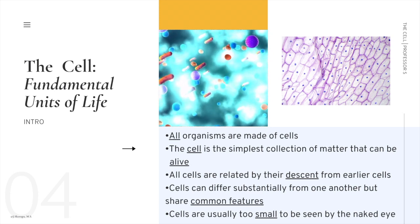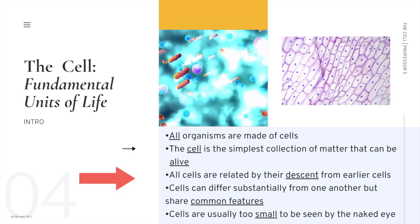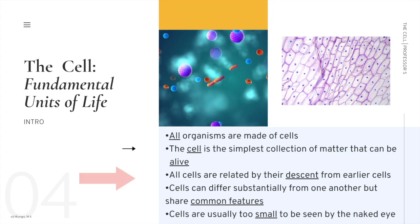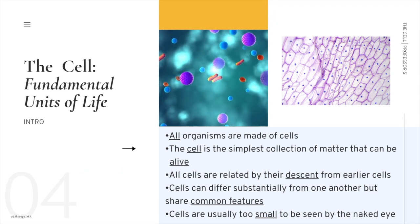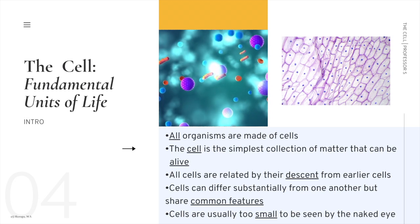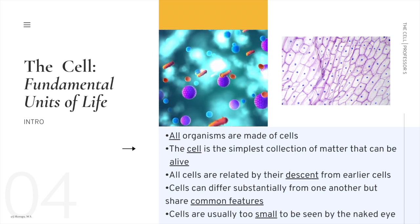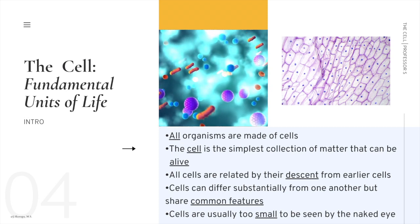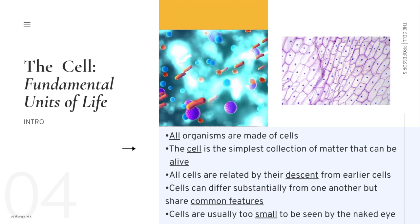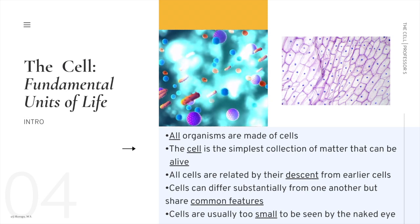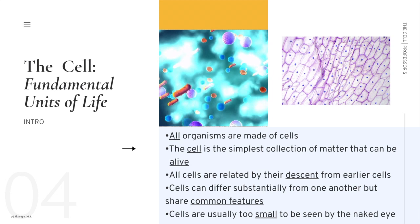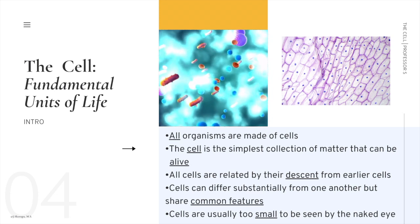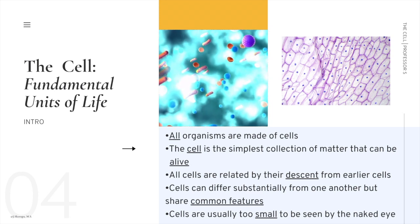The average human body contains 30 trillion cells. We start out as just one cell, which is then replicated through mitotic cell division. These trillions of cells can differ substantially from one another, yet share common features. Types of cells that make up your body include myocytes, hepatocytes in the liver, cardiomyocytes, osteocytes in the bone, neurocytes, melanocytes in the skin, erythrocytes (your red blood cells), and enterocytes in the gut. Cells are usually too small to be seen by the naked eye.